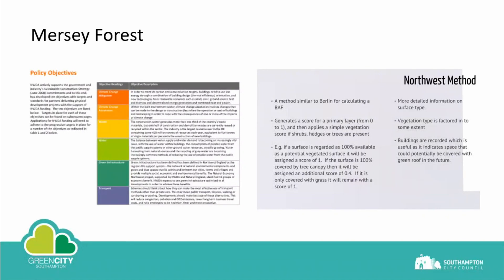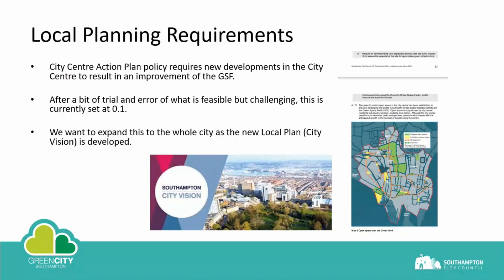Having sorted out the mapping version, rather than reinvent the wheel we used the Excel sheet created by the Mersey Forest team. That's the one we took forward for our city centre action plan. In order to use the tool we needed a policy hook — we were working on our city centre action plan and included a requirement to use the green space factor tool in the green infrastructure policy: Policy AP12, Green Infrastructure and Open Space.